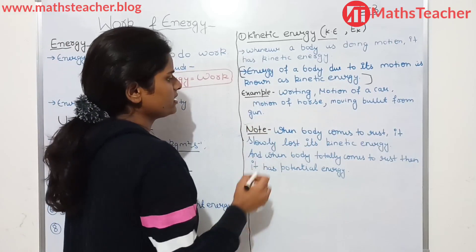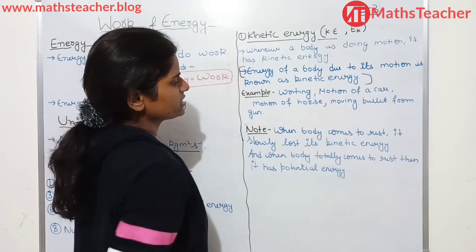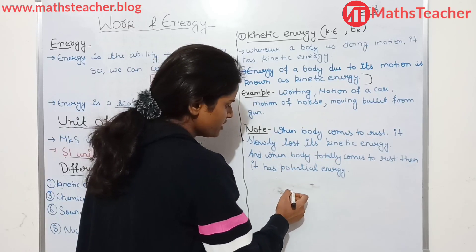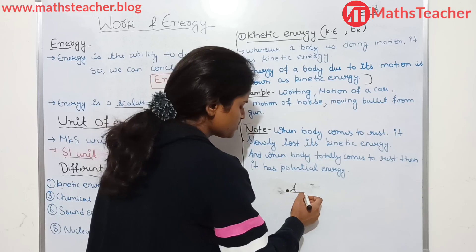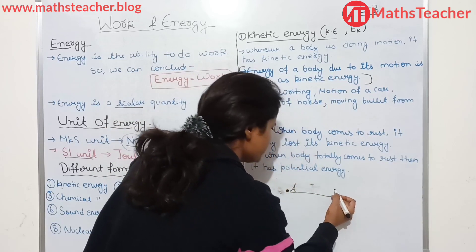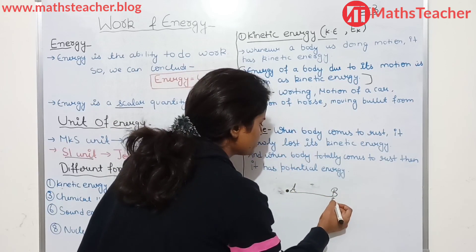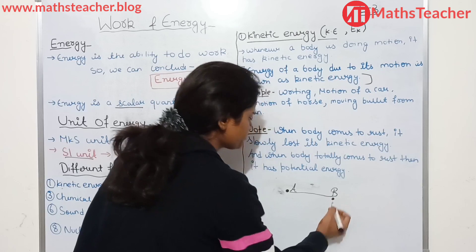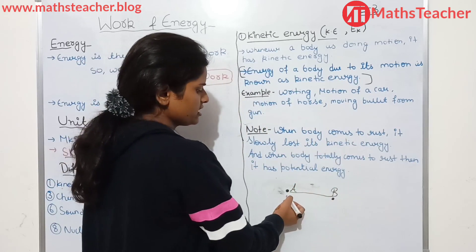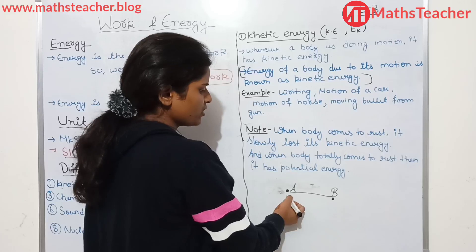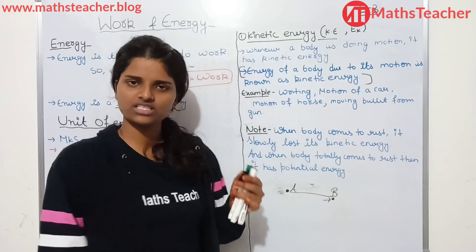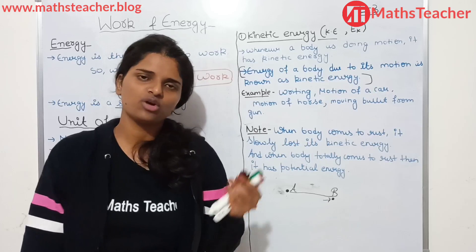An important note: when a body comes to rest, it slowly loses its kinetic energy. I have a body on point A that starts to move and reaches point B. When a body goes from A to B and stops, B is its destination. When it is moving, it has kinetic energy. When it comes to rest, its kinetic energy value decreases.